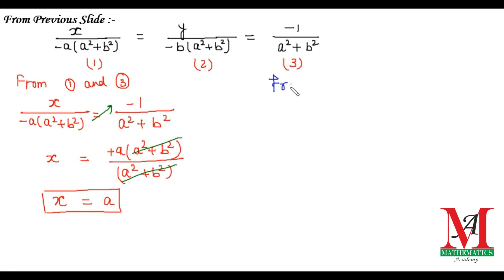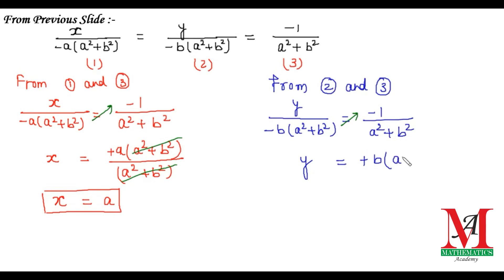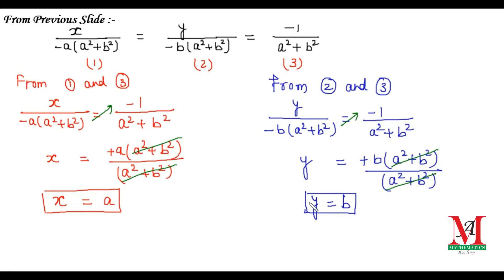For the value of y, we solve part two with part three. We have y over minus b(a² plus b²) equals minus 1 over (a² plus b²). On multiplication, y equals minus times minus, which is plus b, and (a² plus b²) cancels with (a² plus b²). So the value of y is b. That's all friends, thank you so much.